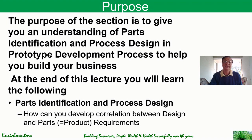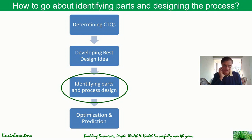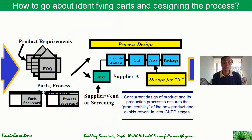How can you go about identifying parts and designing the process? This is the third step in our process. We have already determined CTQs, developed the design requirements, and developed the best design ideas. So how do we now go ahead identifying the parts and designing the process? We use the House of Quality again, as you will see shortly.